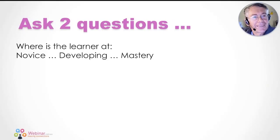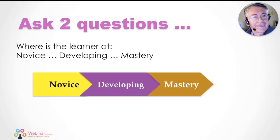We asked two questions, the first being about every group being different. You can see a graphic showing that in any cohort of learners you'll have novices, developing learners, and those who have reached mastery in their particular field. As individuals we may be a novice in one area and more advanced in another — we may fit into more than one of those categories.